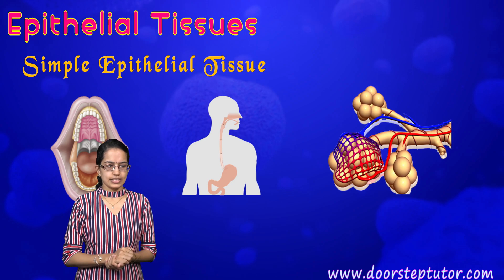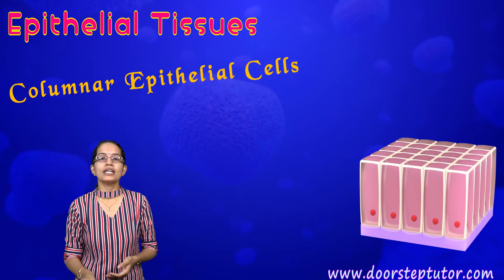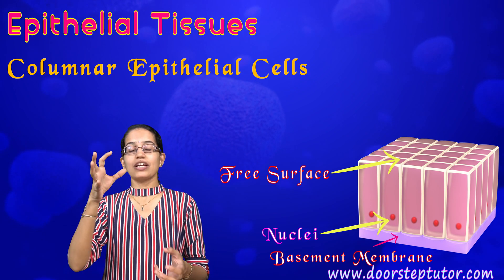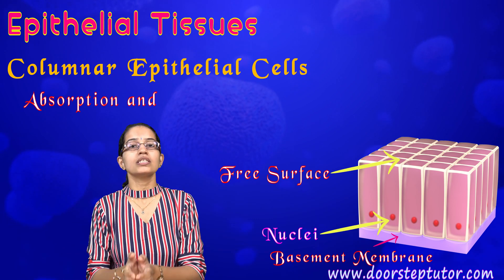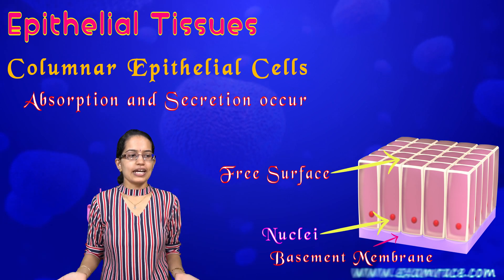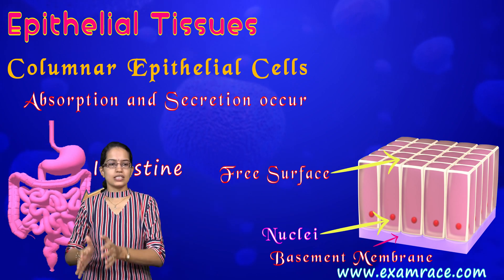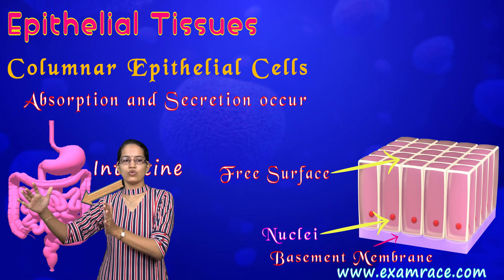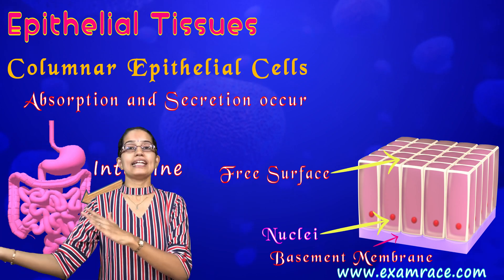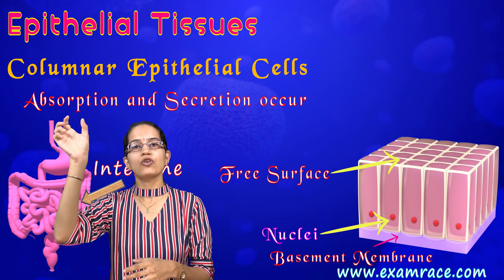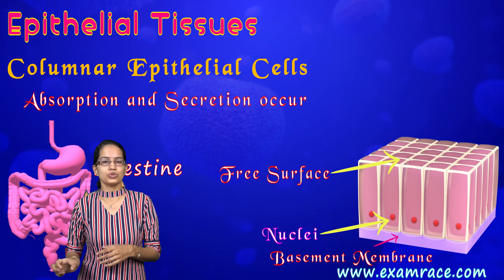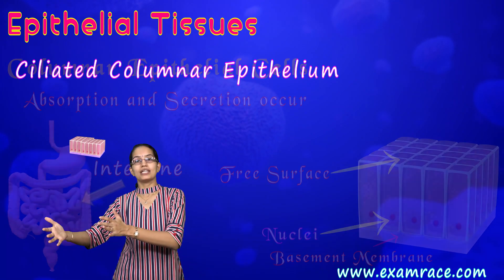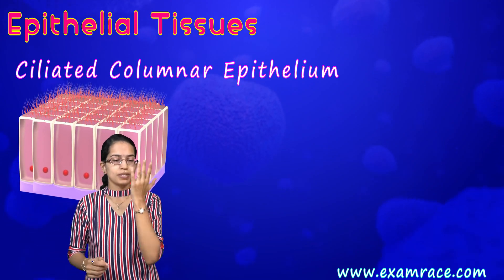The next type is columnar epithelium, which is usually seen where absorption functions occur. A good example is the intestine, where absorption and secretion take place. This facilitates the movement of materials across the epithelial barrier, so columnar epithelial tissues are present there.